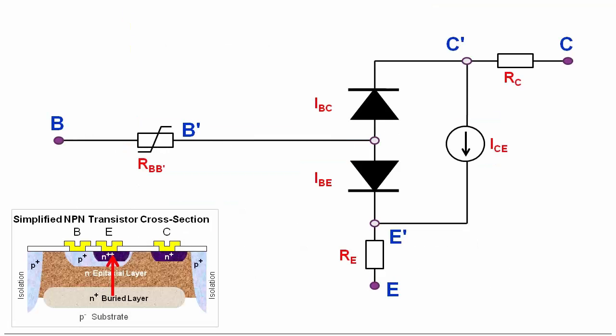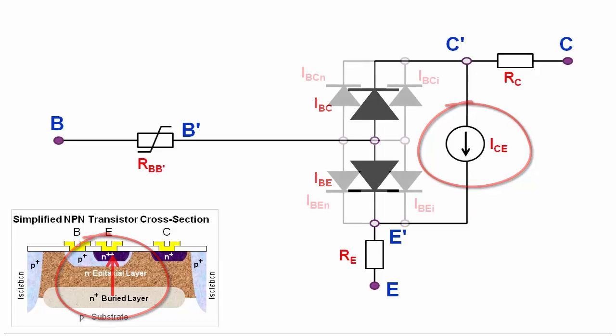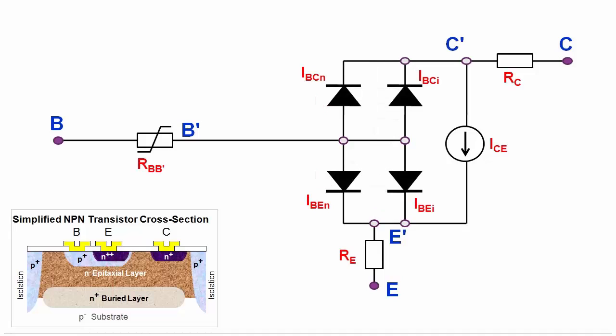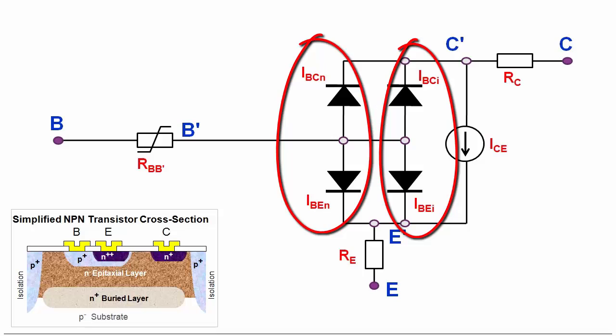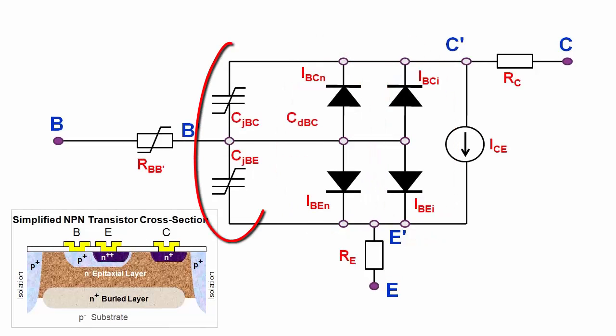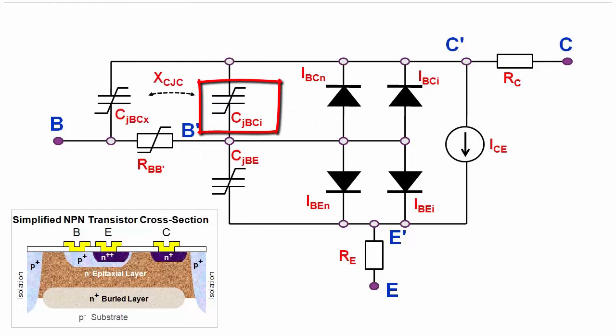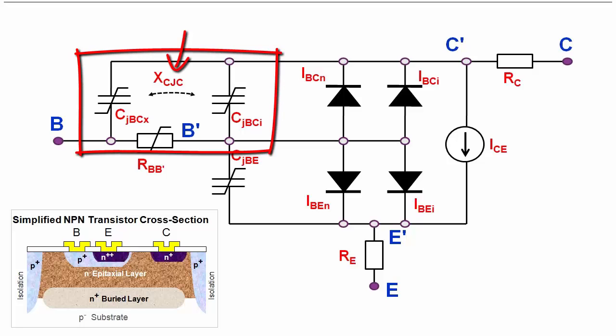This simplified bipolar schematic depicts the base-emitter and base-collector junction diodes, and the flow of the main current from the collector to the emitter. In Gummel-Poon, the diodes are each split into an ideal part with index I, and a non-ideal part denoted by index N, which describes the carrier recombination effect.